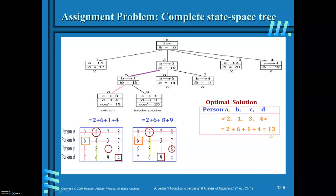To achieve this optimal cost, assign person A with job 2 (cost 2), person B with job 1 (cost 6), person C with job 3 (cost 1), and person D with job 4 (cost 4), giving a total cost of 13. Write the solution in vector format along with the total cost of the assignment.